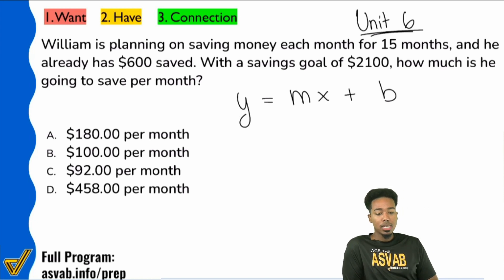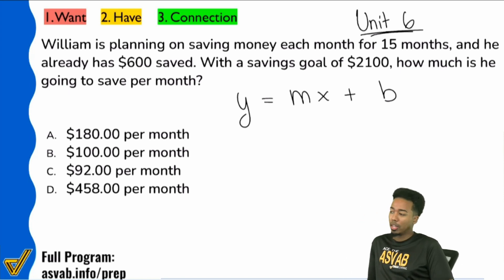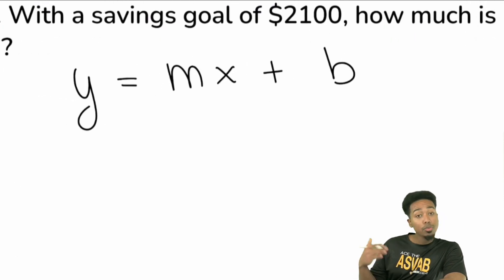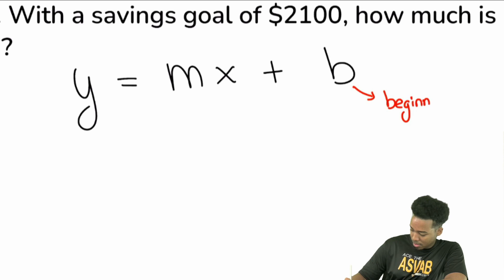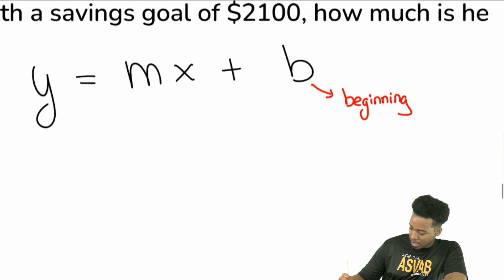Y equals mx plus b. This is a staple of algebra. Algebra 1, linear algebra. This is it. So let me explain what every part means here. Really quick, when it comes to a word problem, everybody hears what this all means. b represents the beginning amount.